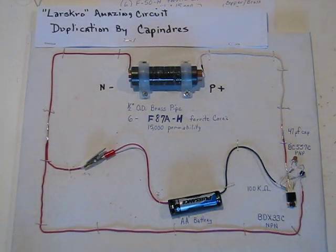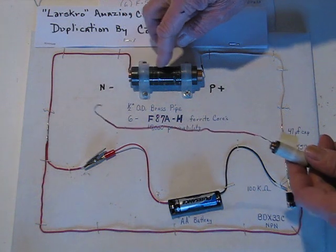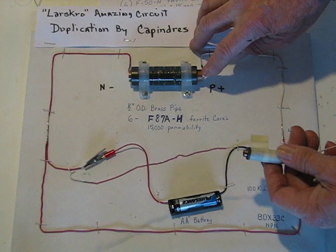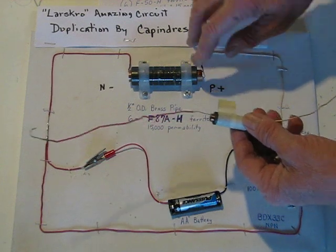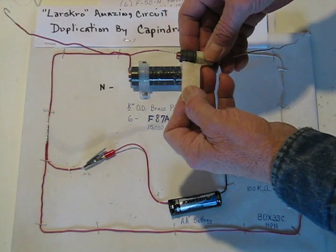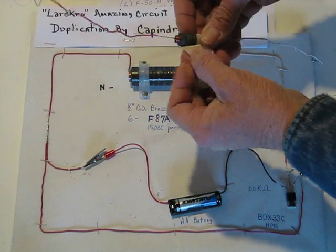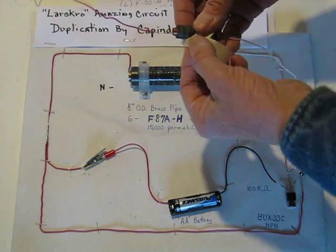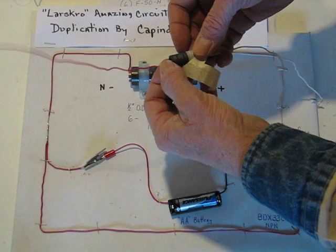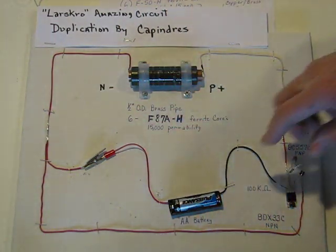Okay, this is a duplication of Larisco's amazing circuit. This here is six ferrite cores on approximately half-inch brass pipe. This is a smaller version just to give you an idea. I'm not going to take the whole thing apart, but you can see the individual ferrite cores and they will slide off.